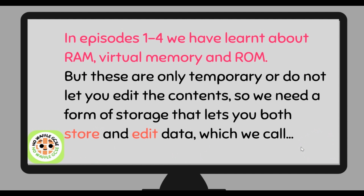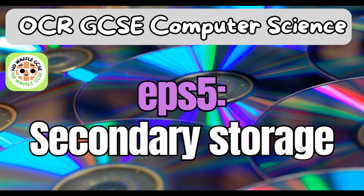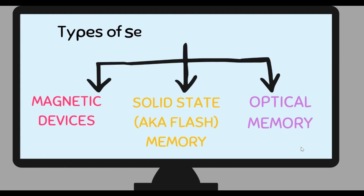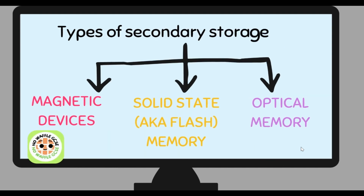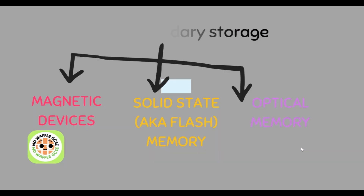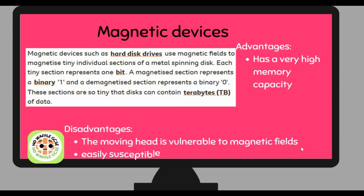We need a form of storage that lets you both store the data when the computer is turned off, but also allows you to edit the data — and we call this secondary storage. There are three different types of secondary storage devices you need to know: magnetic devices, solid state (also known as flash memory), and optical memory.